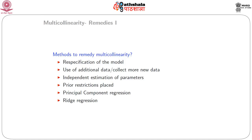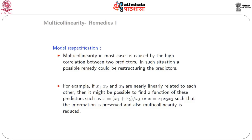Some of these methods are: respecification of the model to include non-multicollinear variables and remove redundant ones; use of additional or more data to fit into the regression model; independent estimation of parameters; and placing prior restrictions on the regression parameters. The last two popular methods are principal component regression and ridge regression techniques. In this module we will discuss some of these methods and the remaining will be discussed in a follow-up module.